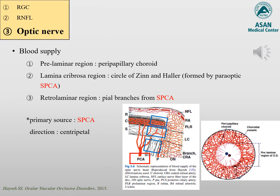The optic nerve is mainly supplied by short posterior ciliary arteries. The prelamina part is supplied by peripapillary choroid; the lamina cribrosa part is by the circle of Zinn and Haller, formed by paraoptic posterior ciliary arteries; and the retrolaminar region is by recurrent branches from the posterior ciliary artery. Therefore, the main source of blood supply is the short posterior ciliary artery, with blood flowing in the centripetal direction toward the optic nerve.